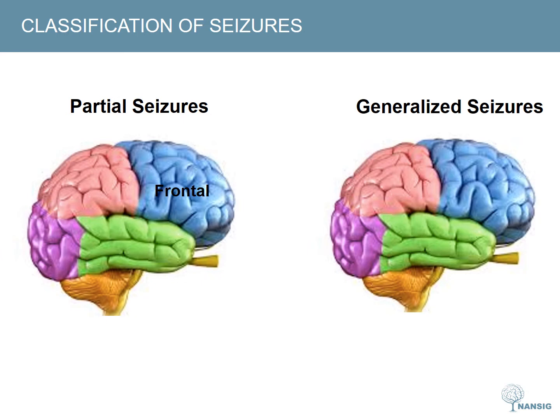Frontal lobe seizures can be characterised by the Jacksonian march — a march of involuntary movement from one muscle group to the next in a limb, often seen as moving up the arm. Parietal lobe seizures arise in the sensory cortex with the patient describing paresthesia or tingling in an extremity or on the face.